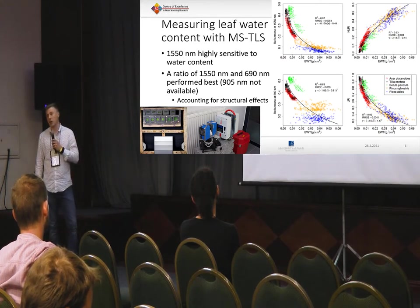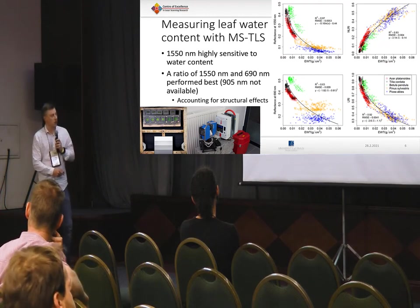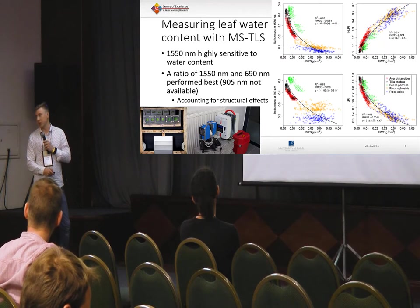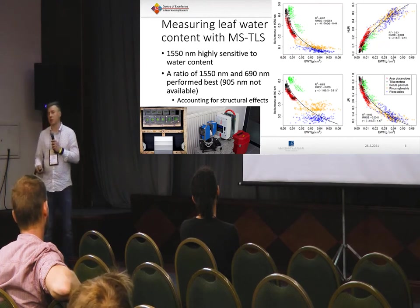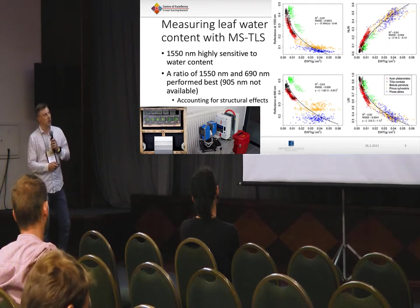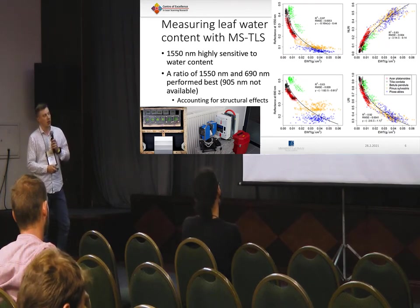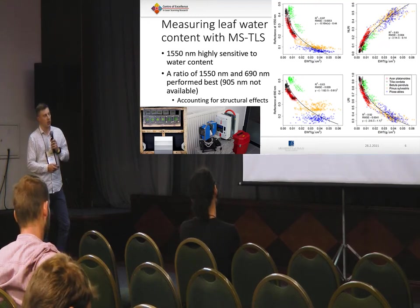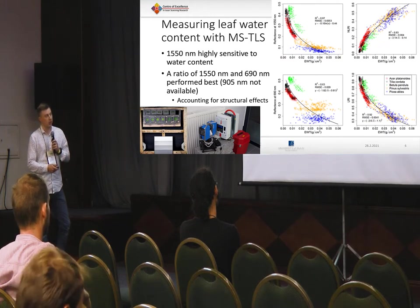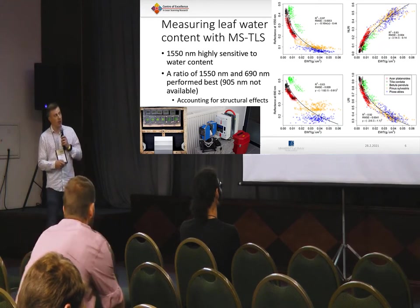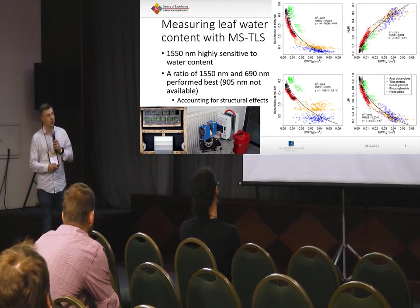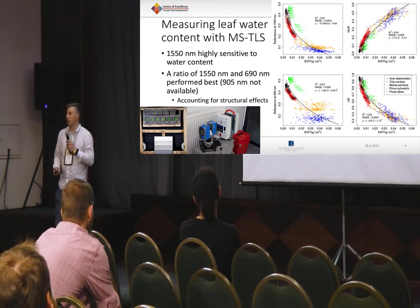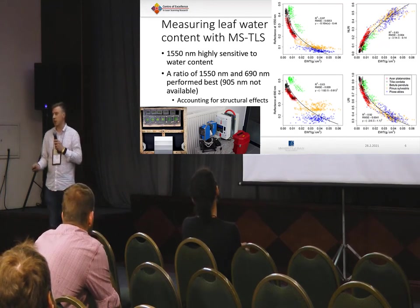The first test was done in laboratory conditions, framing different species. We had five different species, 100 samples, and they were scanned consecutively about 14 times. We see that the 1550 nanometer wavelength is really highly sensitive. The 1550 nm and also 690 nanometer showed some differences in reflectance according to decreasing leaf water content. When we take a normalized difference index of the two wavelengths, we can get an even better correlation, as including the other wavelength can account for some of the structural effects.